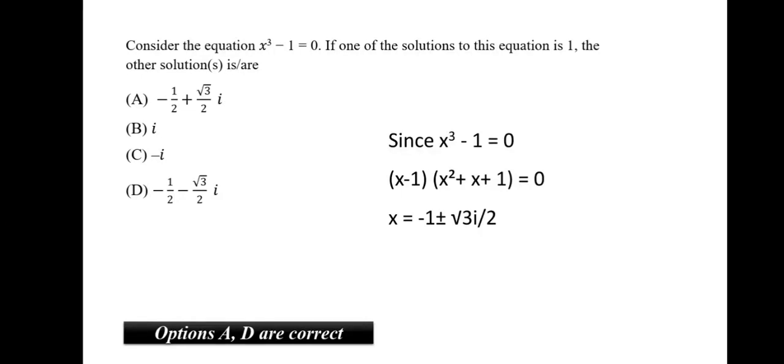Consider the equation x cube minus 1 is equal to 0. If one of the solutions to this equation is 1, the other solution is. So, first let's understand how did this 1 come. So, when you break x cube, you can break it into two parts. You can break it as x minus 1 and x square plus x plus 1. So, when we solve x minus 1 and equate it equal to 0, we get the value of x is equal to 1. Now, when we solve x square plus x plus 1, we get the value minus 1 plus or minus root 3i by 2. We can get it as minus 1 by 2 plus or minus root 3 by 2i. And the correct option here thus would be A and D option.